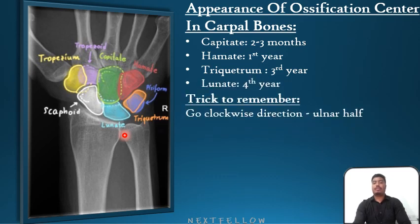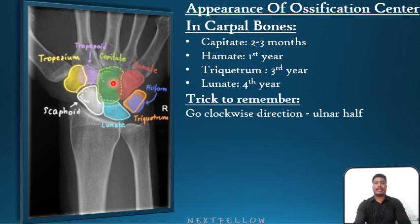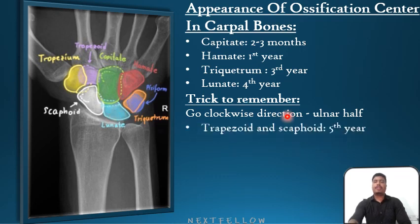A trick to remember: go clockwise in the ulnar half — this is the ulnar bone — so in the ulnar half, go clockwise for the appearance of ossification centers: capitate, hamate, triquetrum, and lunate.